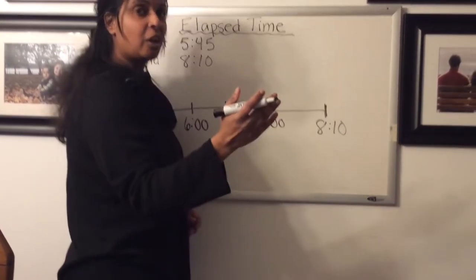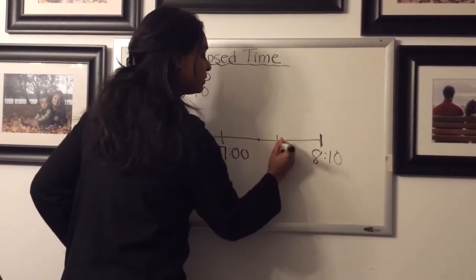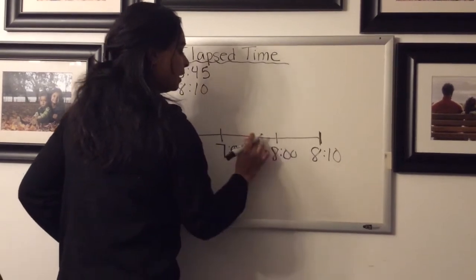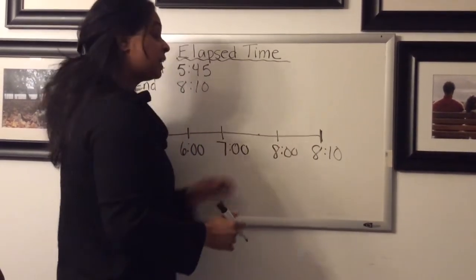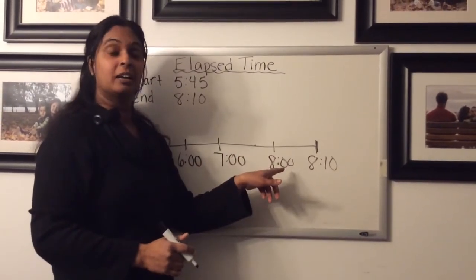Should I go to nine o'clock? Probably not. That would be over my time. So I'm going to actually move this over a bit. So I don't want to go another hour because that's going to put me over my end time. So I can only go to eight o'clock.